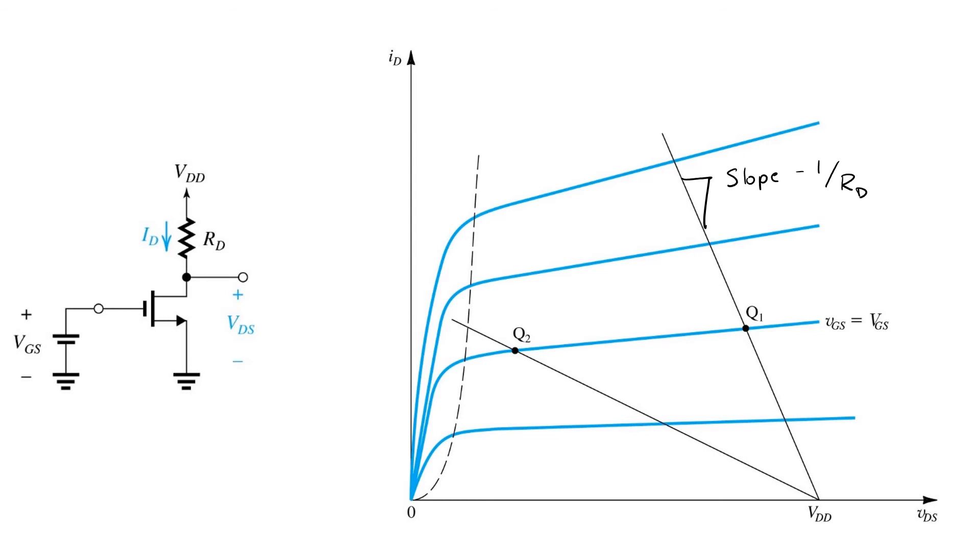Now, if you want to ensure that the output voltage VDS remains in a range where the transistor is in saturation over the maximum possible voltage excursions,